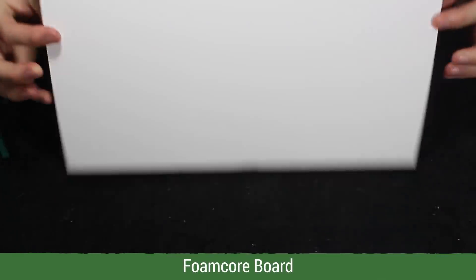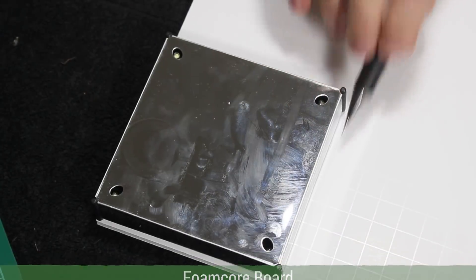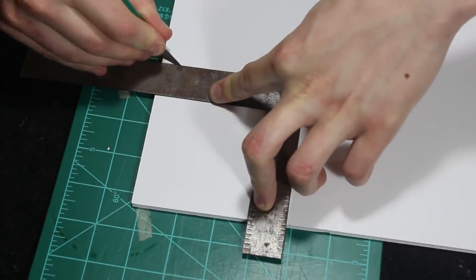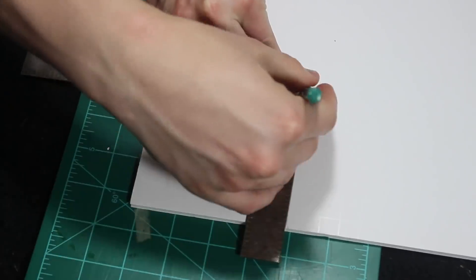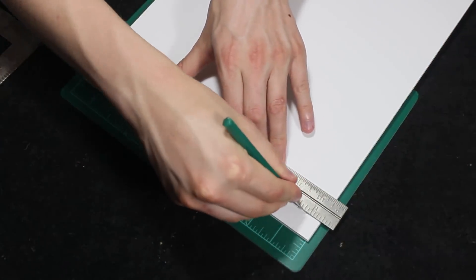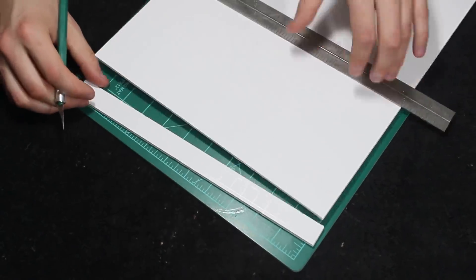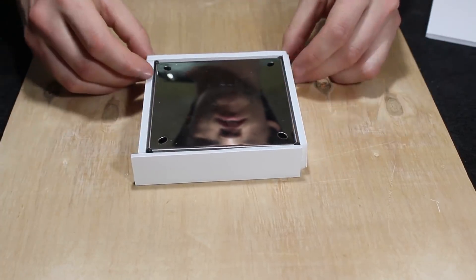From there I got some foam core board in order to conceal the platform. As is, it doesn't really fit the aesthetic that I like. So I cut out a few pieces of foam core to make a box. After getting the pieces cut out I set them up to ensure they fit together properly.